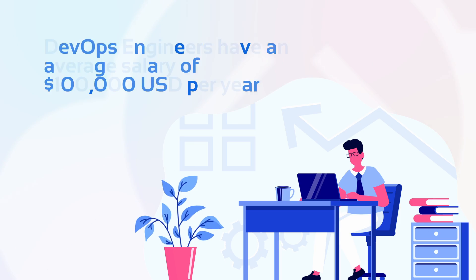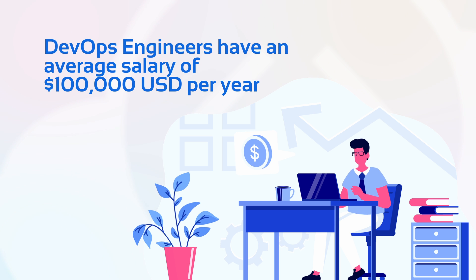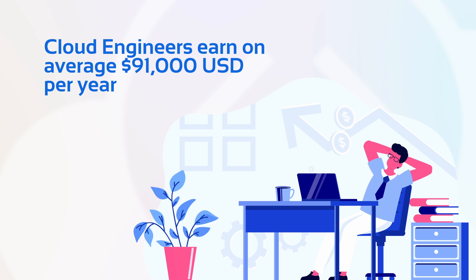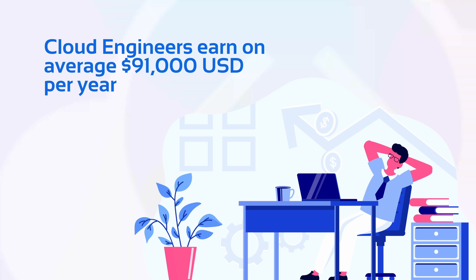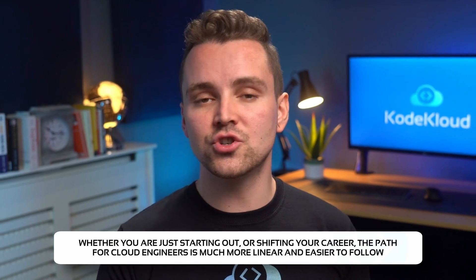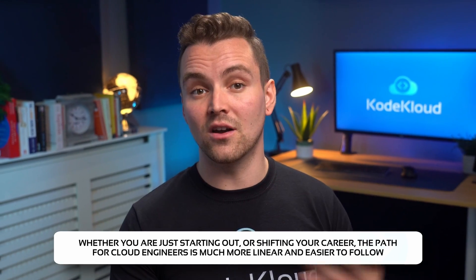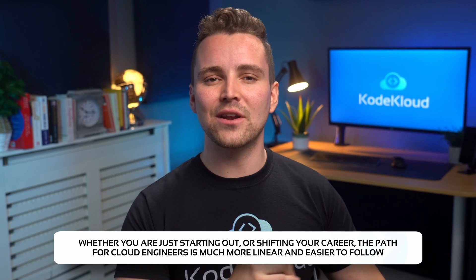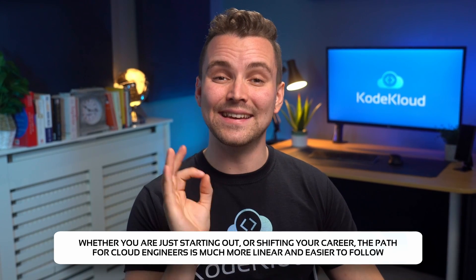DevOps engineers have an average salary of about $100,000 US dollars per year. Cloud engineers, on the other hand, earn approximately $91,000 US dollars per year. However, there are also many considerations like years of experience and expertise that can further lower this gap. Nevertheless, being a cloud engineer is a much easier approach — whether you're just starting out or shifting your career from another industry to IT, the path for cloud engineers is much more linear and easier to follow.